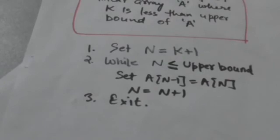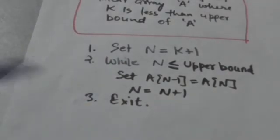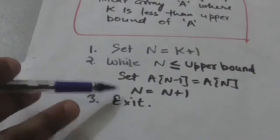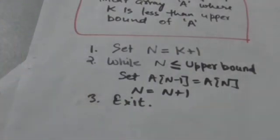If n is greater than upper bound, we will stop. The two steps are repeated until n becomes greater than upper bound, at which point the algorithm terminates.